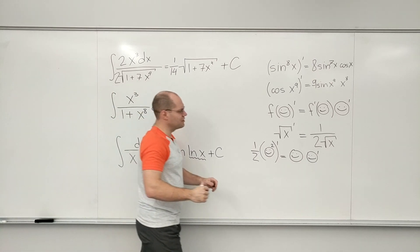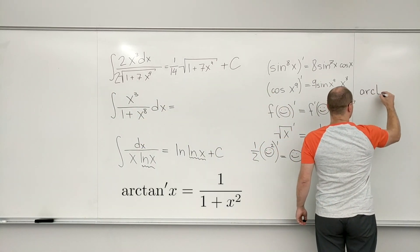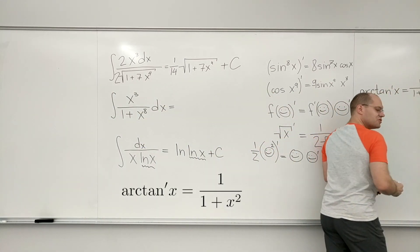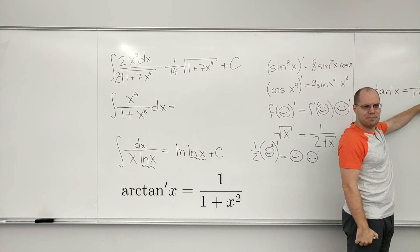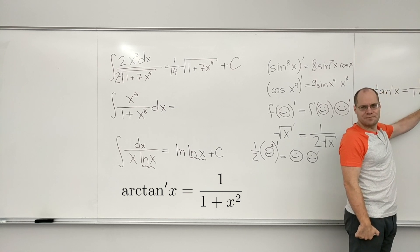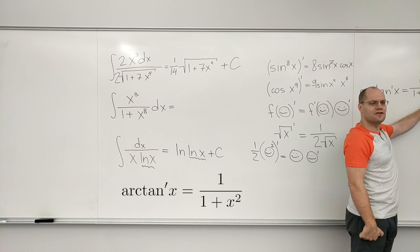So, the derivative of arctan, and you should think of 1 divided by 1 plus x squared as an unmistakable pattern. 1 plus the square of something. There's no hiding from it.